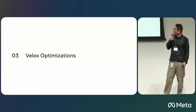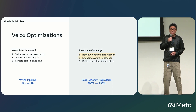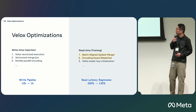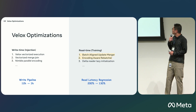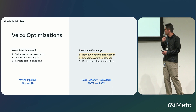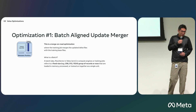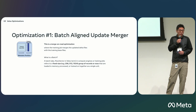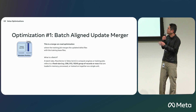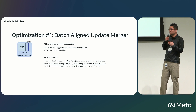Let's dive into some VLOX optimizations. Since Pedro and Konstantinos already mentioned many write-time optimizations, I'll focus on the read optimization — how we merge data in VLOX. This achieves reduced latency regression from 200% down to 130%, and we are continuously improving it.